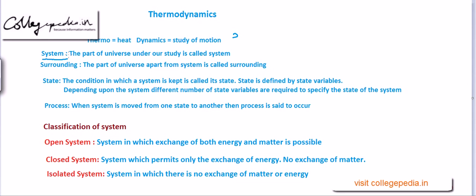The part of the universe apart from the system is called the surrounding. The next definition is state — a condition in which a system is kept. State is defined by certain variables called state variables, which help us describe the state of a system. For example, for an ideal gas, if I specify pressure, temperature, volume, and moles of gas, then the state is completely defined.